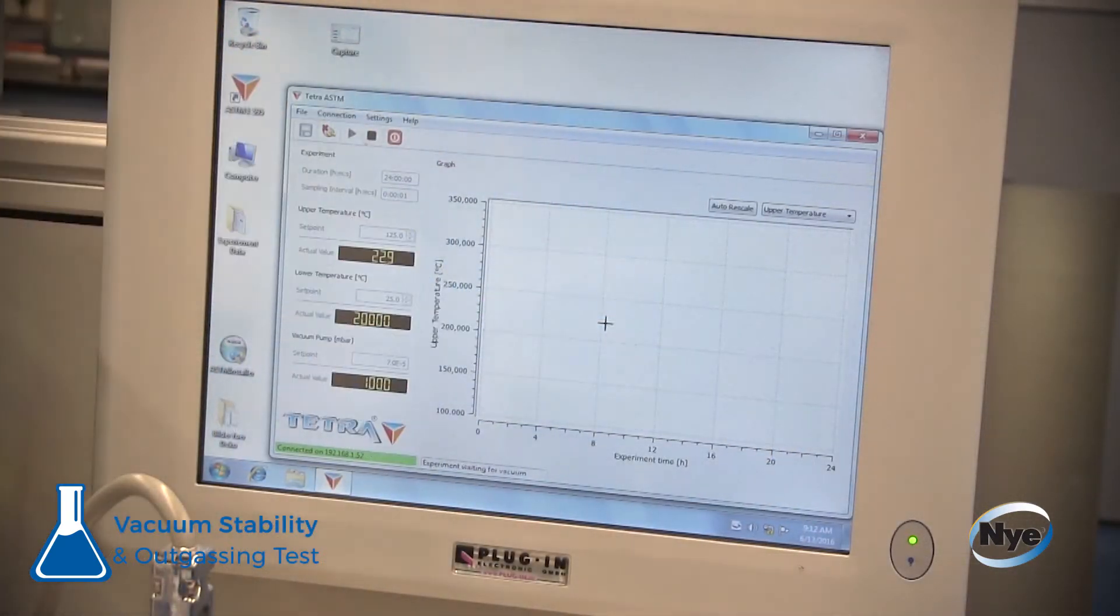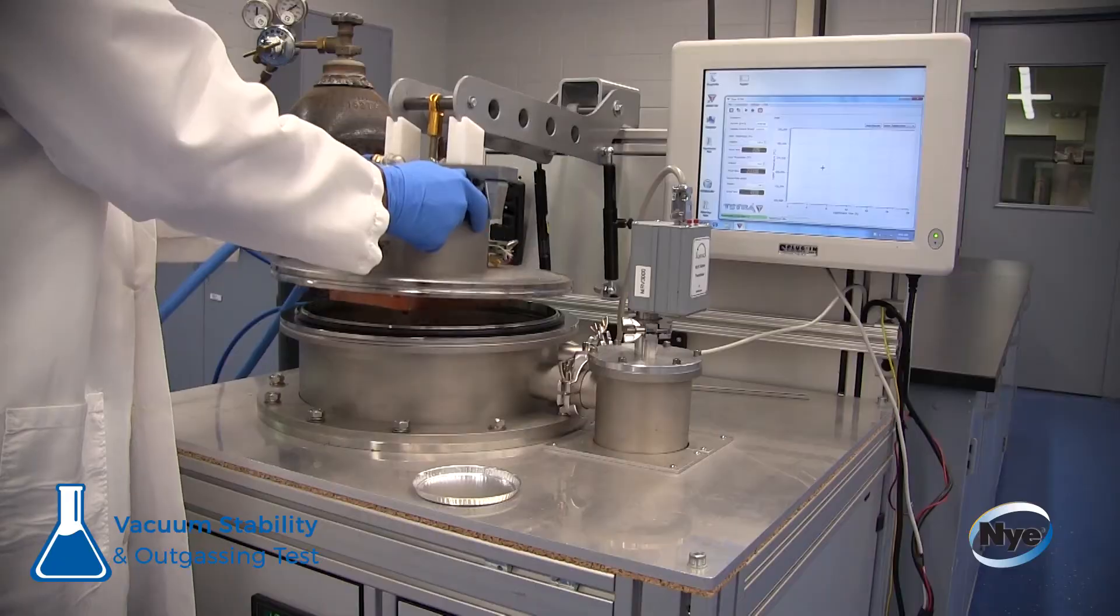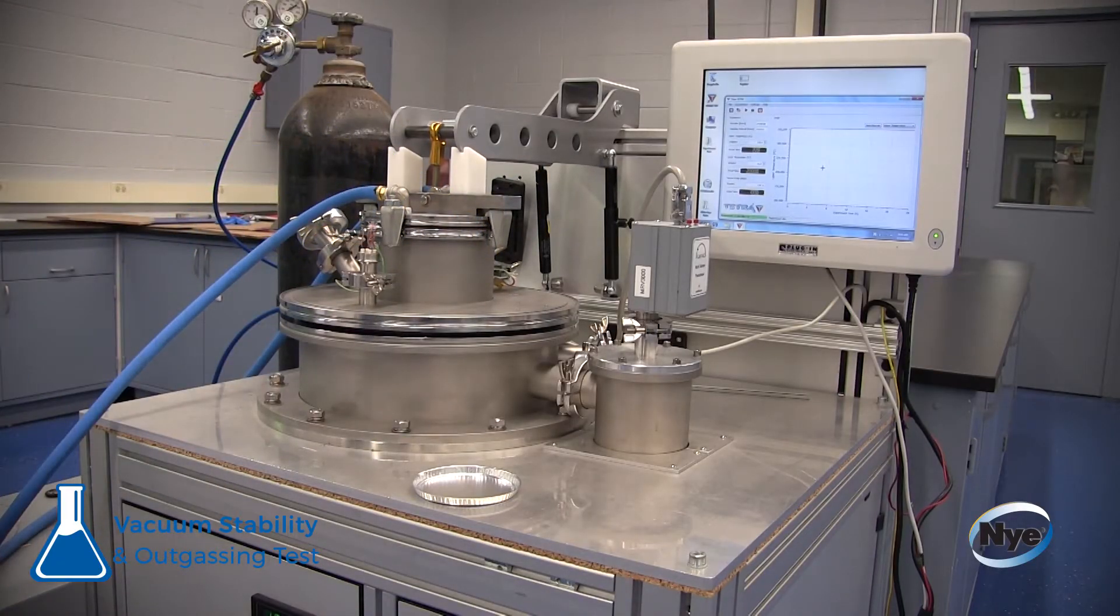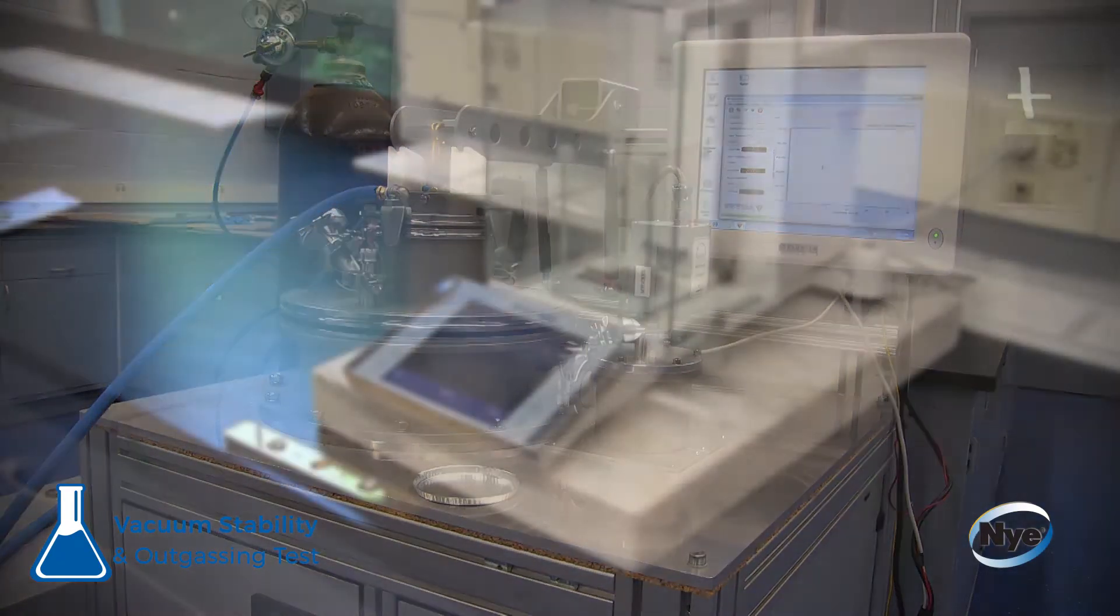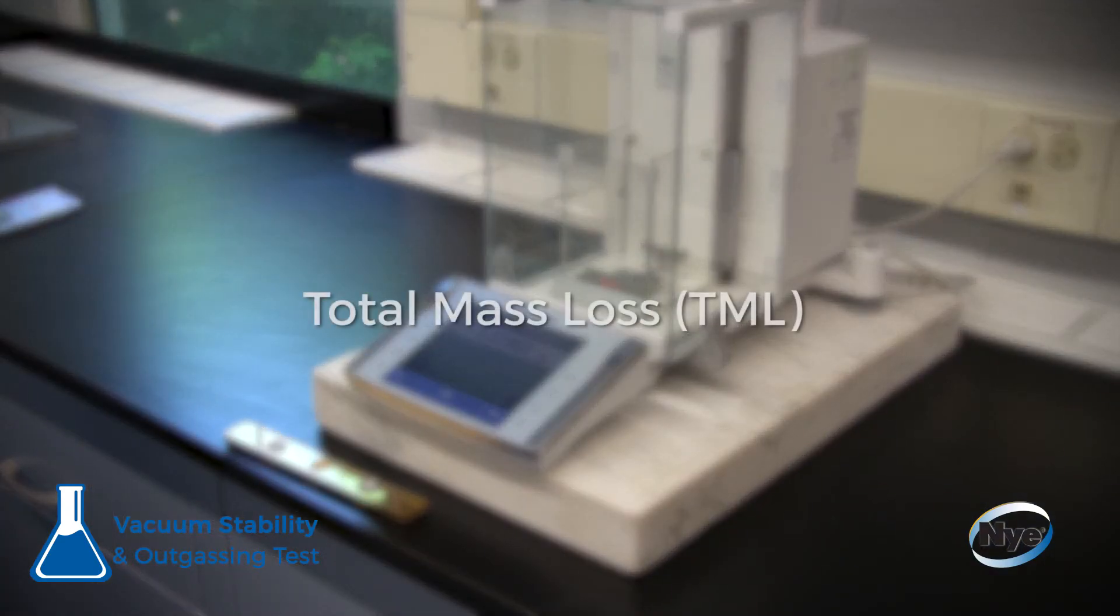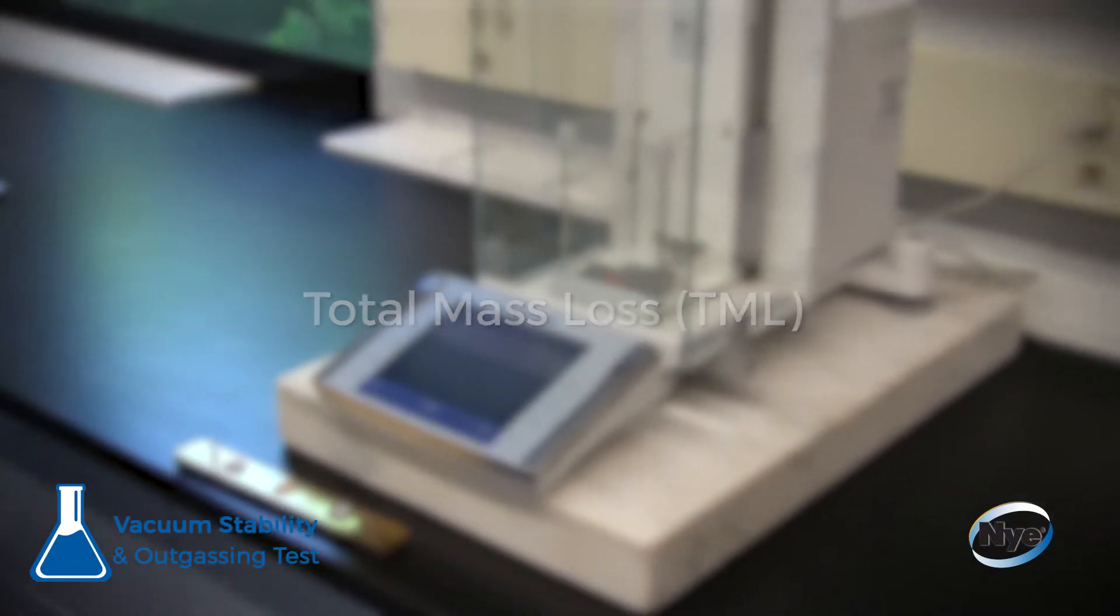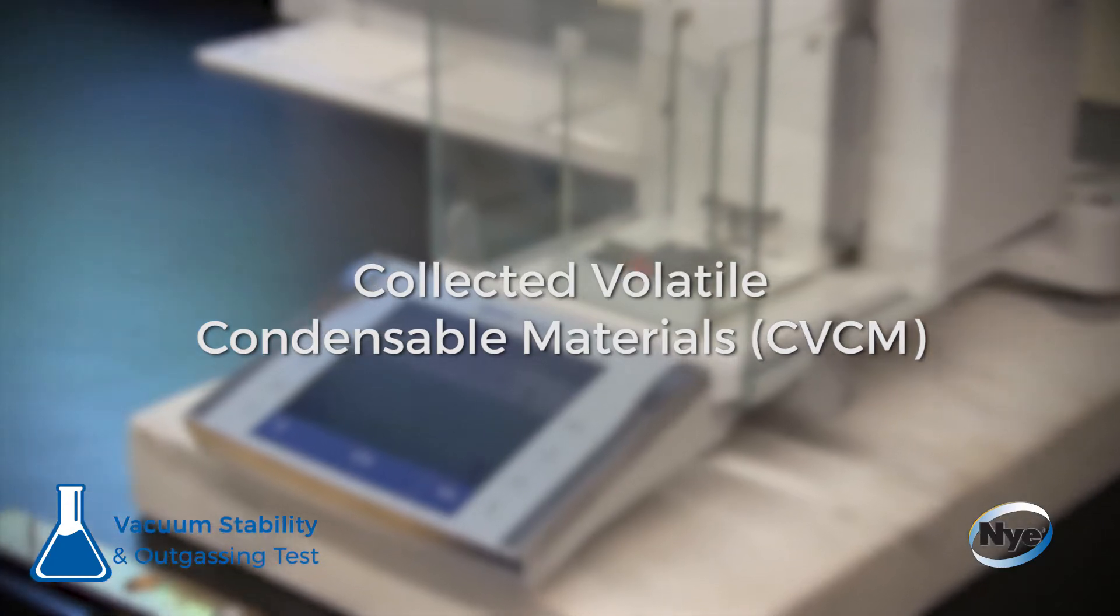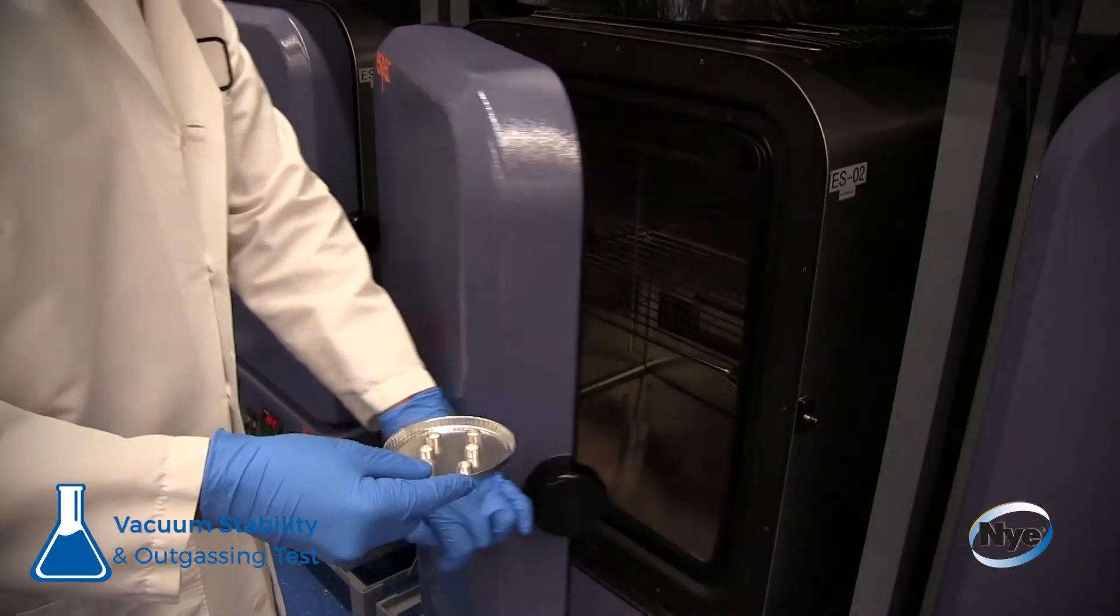The purpose of the test is to determine the amount of volatile content in a material when exposed to heat and vacuum in a closed system. The two parameters that are measured are total mass loss and collected volatile condensable materials.